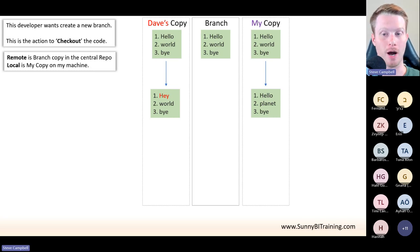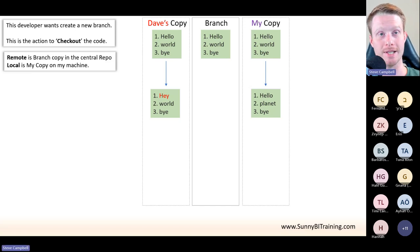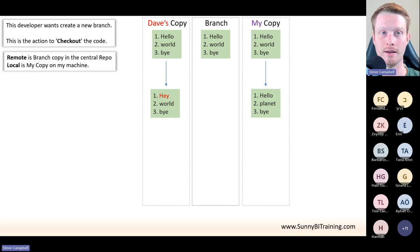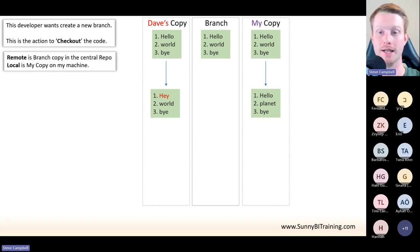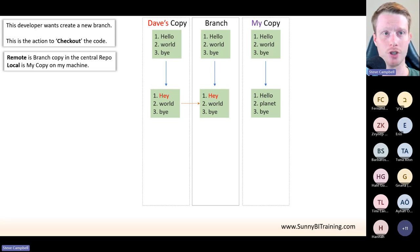So Dave said 'hey well bye', and because we both took a copy at the beginning and now both worked independently, Dave's copy says 'hey well bye' and my copy says 'hello planet bye' — because we worked independently. Now of course we need to frequently communicate because we don't want to keep working without talking to each other and possibly override things the other person has done. So what Dave does is say I'm happy with the changes — my task was just to change line one.